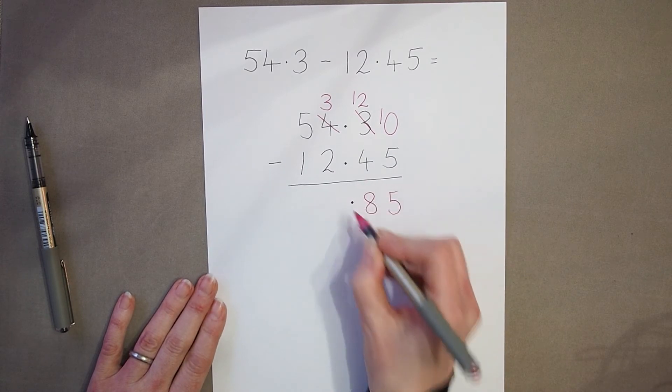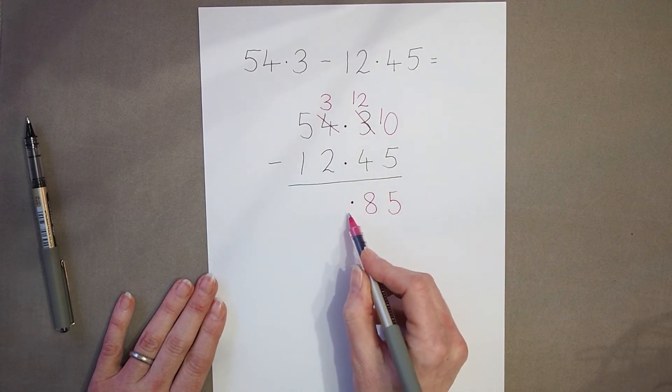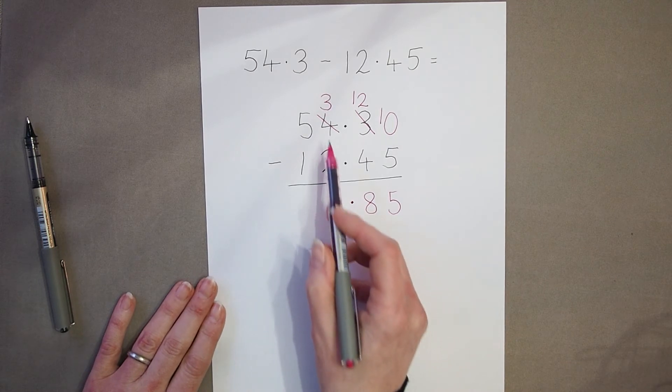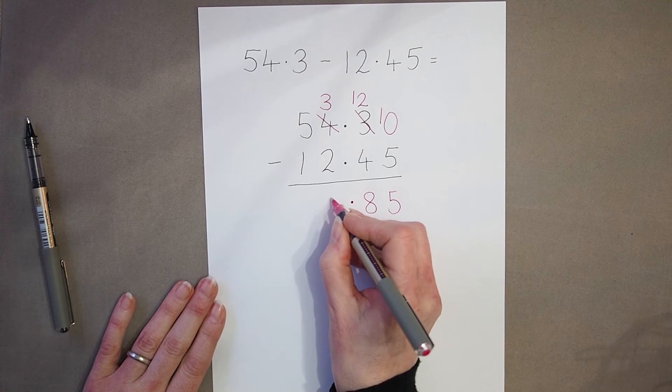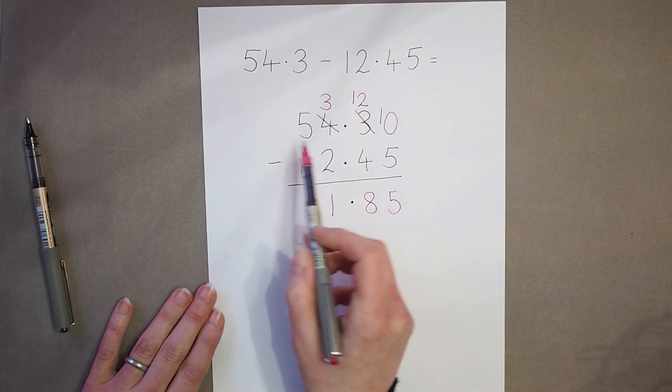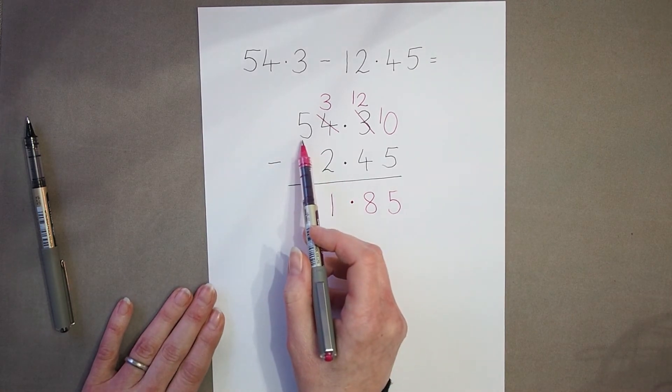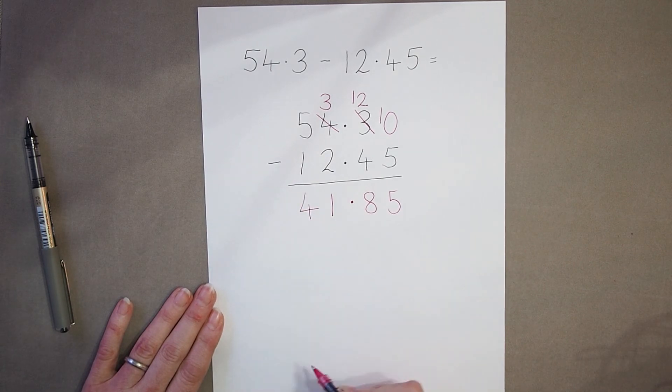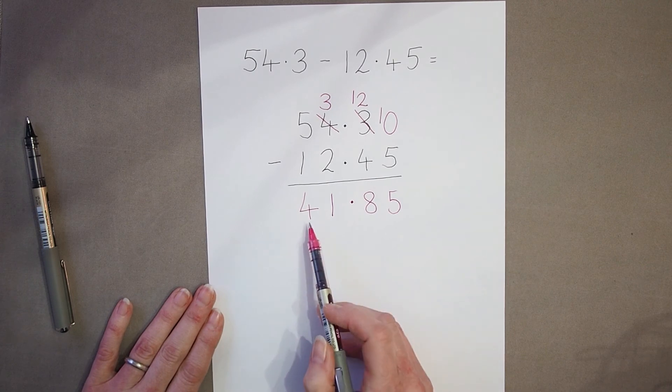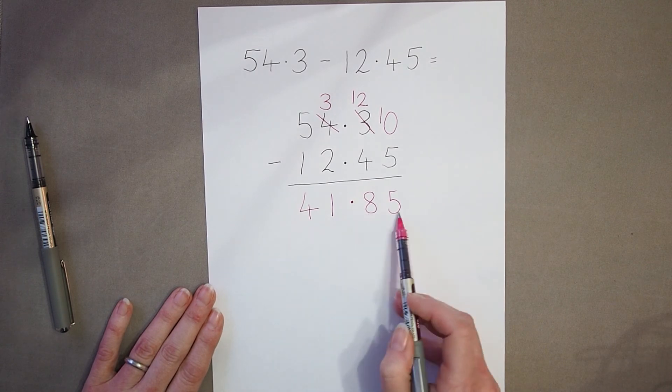And now I've come to the decimal point, which stays in the same place. I'm into my units now. Three subtract one, two is one. And into my tens to finish off. Five tens take away one ten is four tens. So my answer is forty-one point eight five.